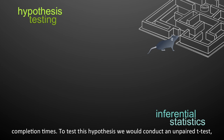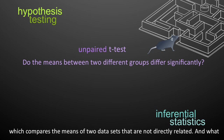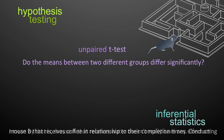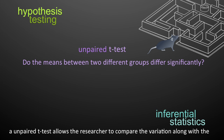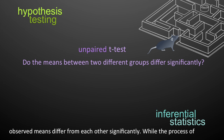To test this hypothesis, we'd conduct an unpaired t-test, which compares the means of two data sets that are not directly related — mouse A receiving water doesn't have any effect on mouse B receiving coffee in relationship to their completion times. Conducting an unpaired t-test allows the researcher to compare the variation along with the mean to support or reject the null hypothesis.